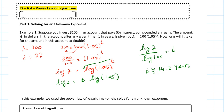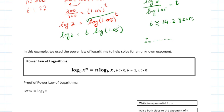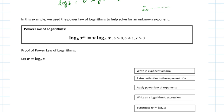Because this is a word problem, you're going to have to put a therefore statement: therefore, it's going to take about 14.2 years for the $100 to double in this account. In this example, we used the power law of logarithm to solve for an unknown exponent. The power law states that log base b of x to the power of n equals n times log base b of x, where b must be a positive number not equal to 1, and x must be a positive number.